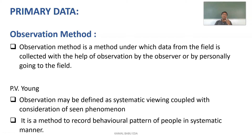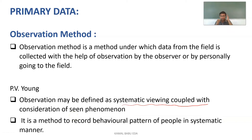According to PVN, observation may be defined as systematic viewing coupled with consideration of a scene or phenomenon. We are going into the situation and observing the sample. If you want to study a community, we go and mingle with them, work and live along with them, and collect the data. It is a method to record behavioral patterns of people in a systematic manner.